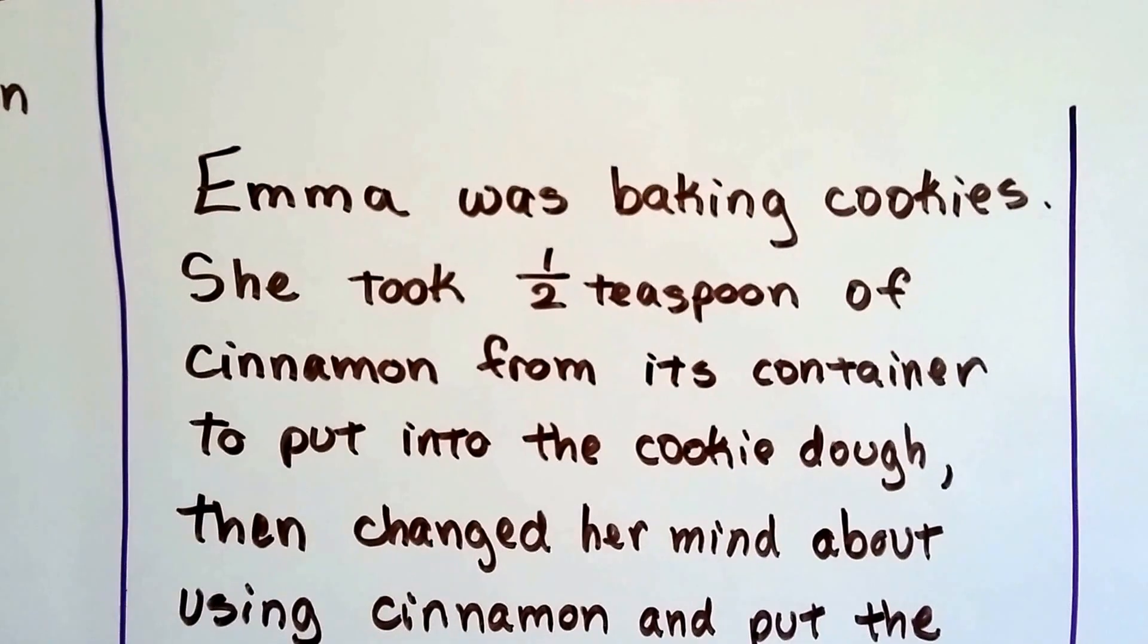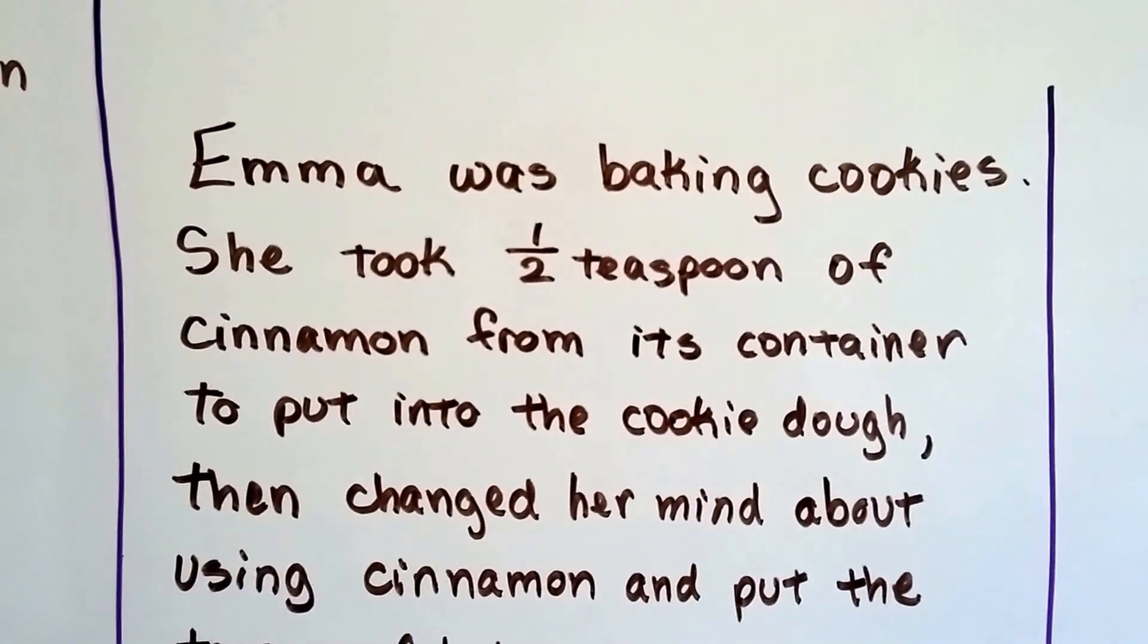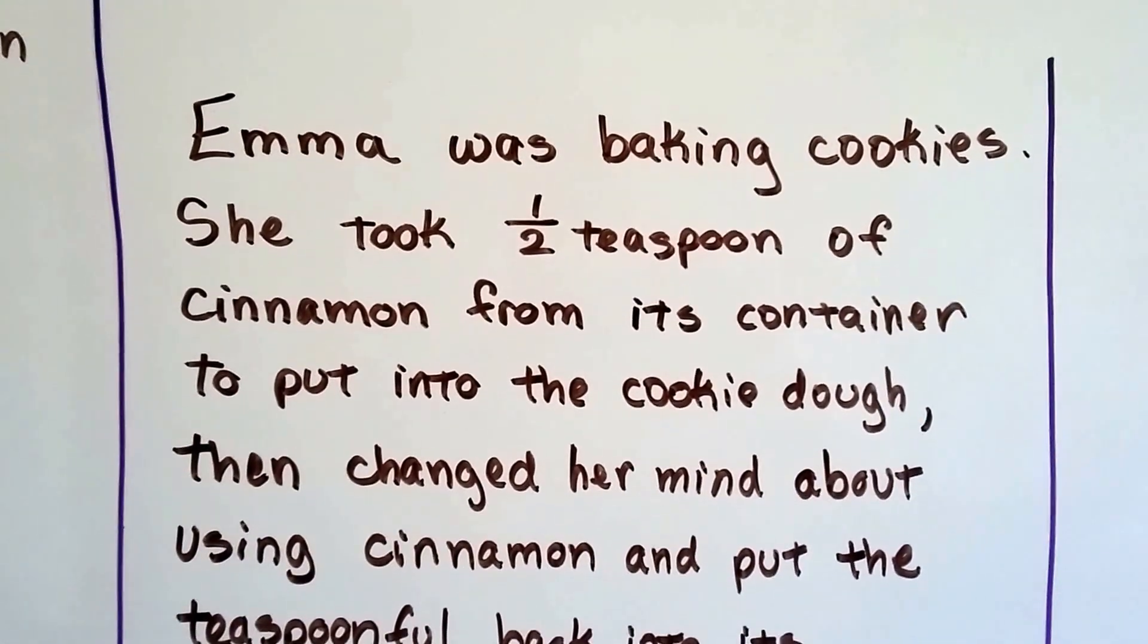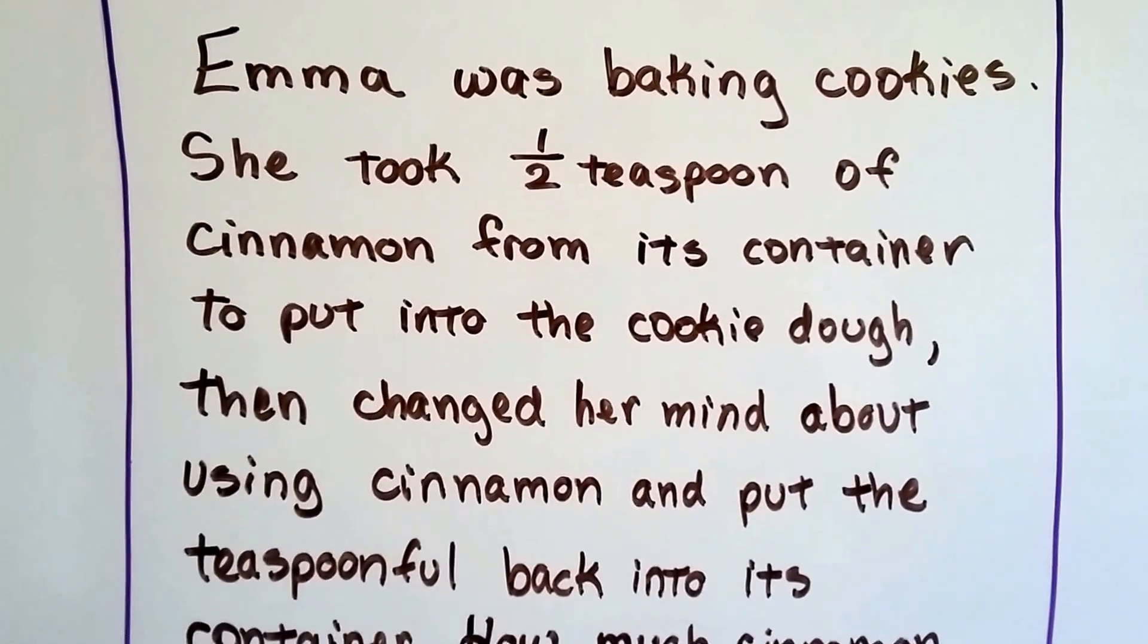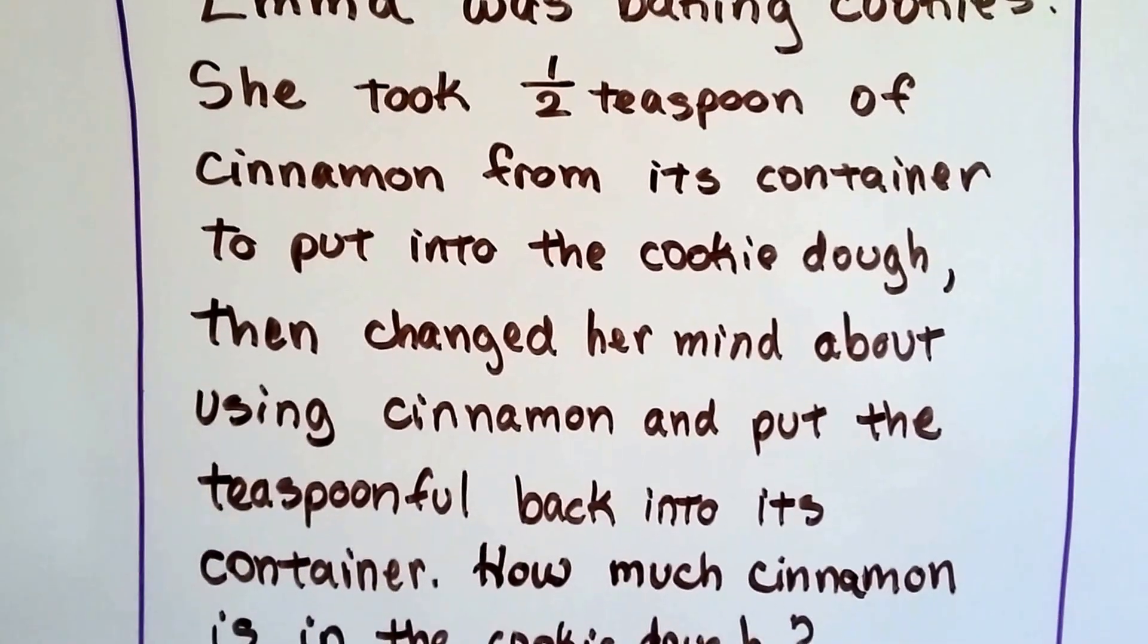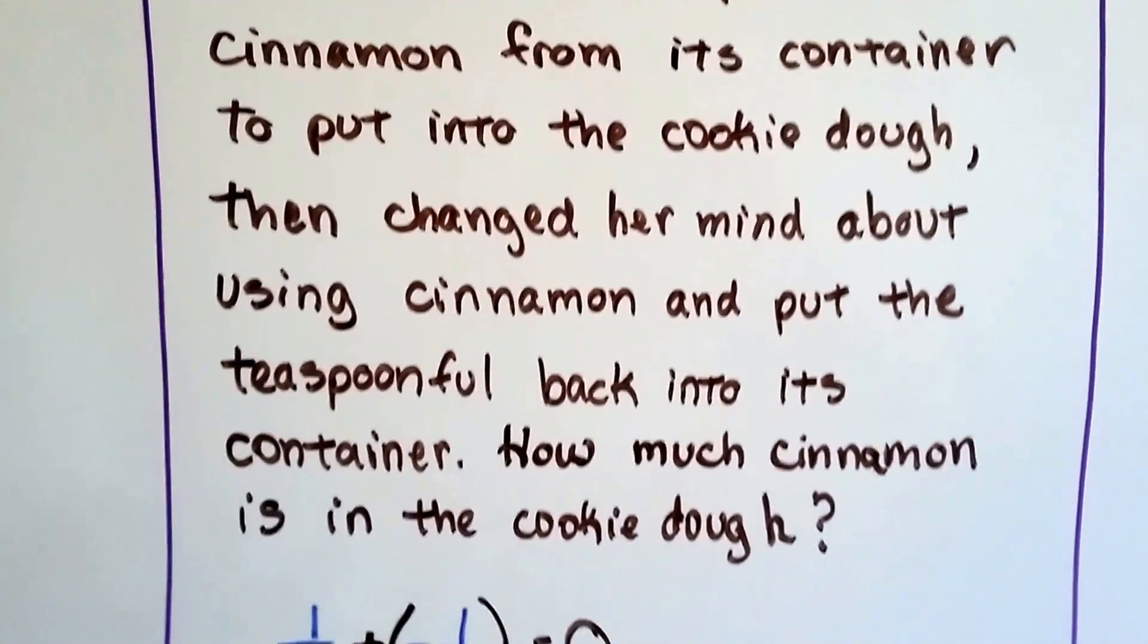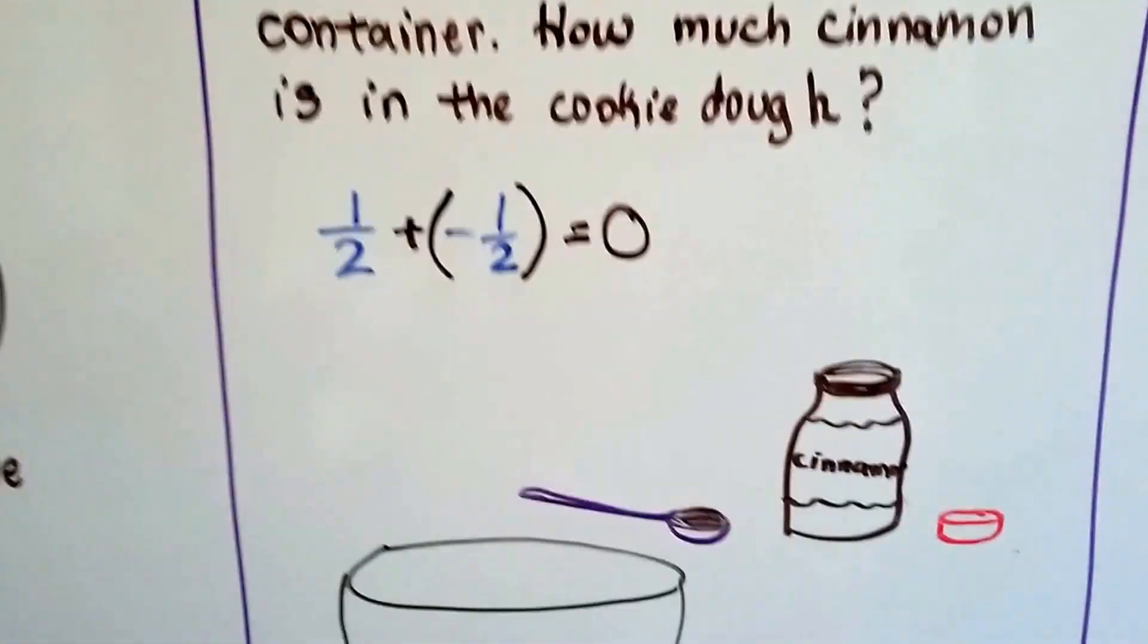Emma was baking cookies. She took a half a teaspoon of cinnamon from the jar, from its container, to put into the cookie dough, and then changed her mind about using cinnamon and put that teaspoonful back into the container. So how much cinnamon is in the cookie dough? Well, none, right? Zero.